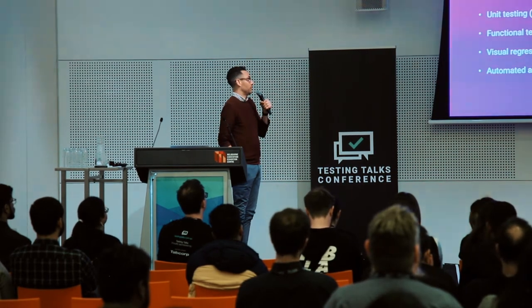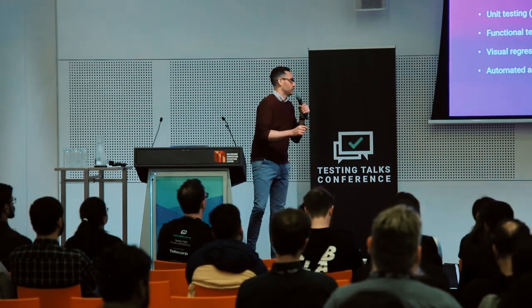For robustness — if the system keeps breaking, you won't get adoption. You've got to do the right testing. You want to be doing unit testing with Mocha, Jasmine and Jest; functional testing with Nightwatch or Casper; visual regression testing with Applitools or Percy; and automated accessibility testing as well.